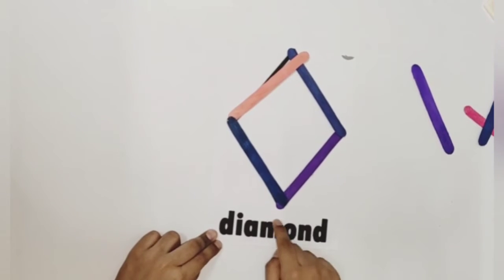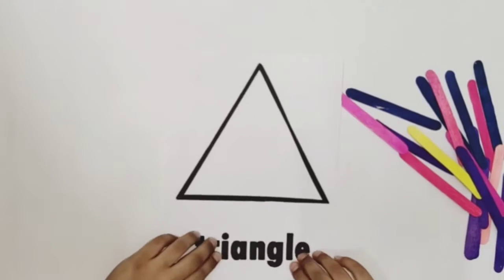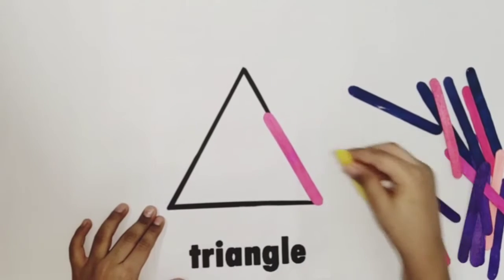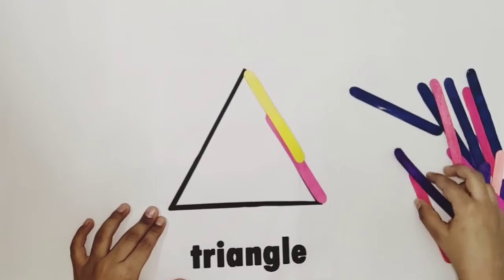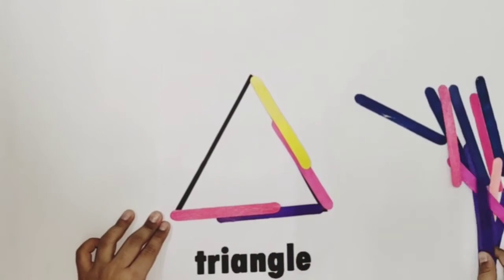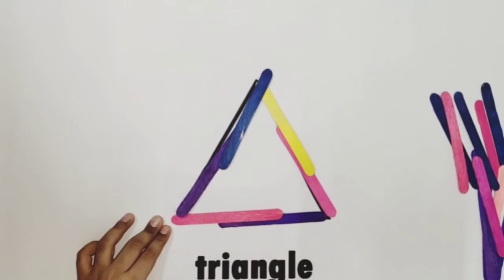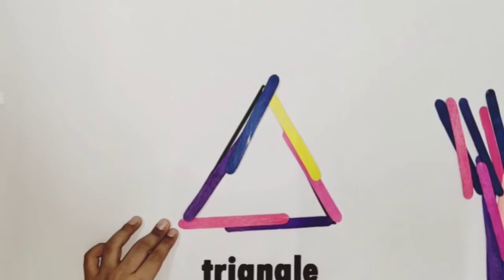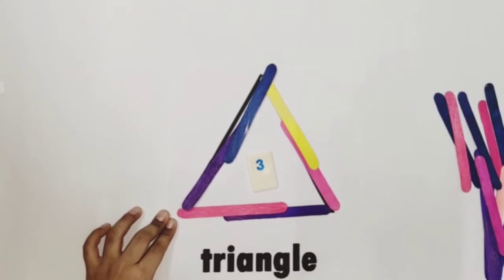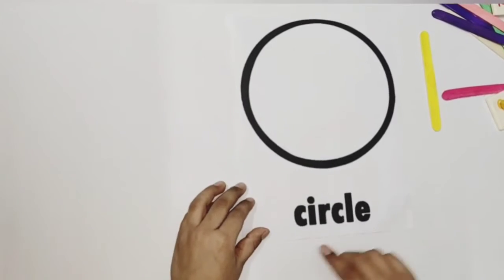Four corners, four sides. Triangle. Three sides, three corners. Three sides, three corners. Circle.